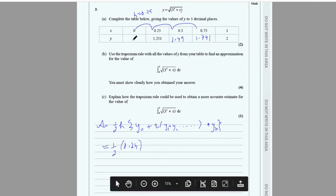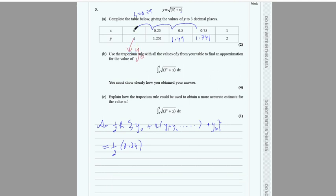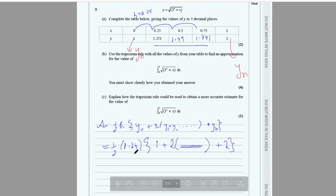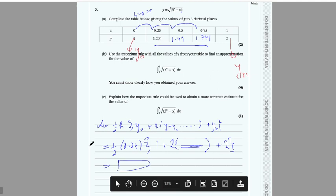The first y-coordinate is always y₀ and the last is yₙ, regardless of the actual x values. The remaining values y₁, y₂, y₃ are added inside the bracket and multiplied by 2. Here y₀ is 1, yₙ is 2, and the three middle values are added. Solving this gives the approximate area, which is an alternative to integration.